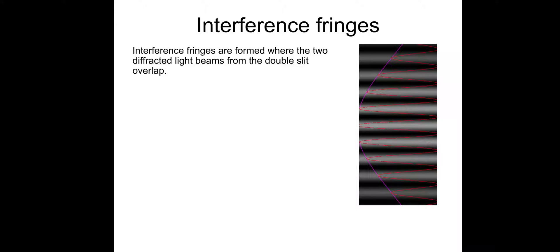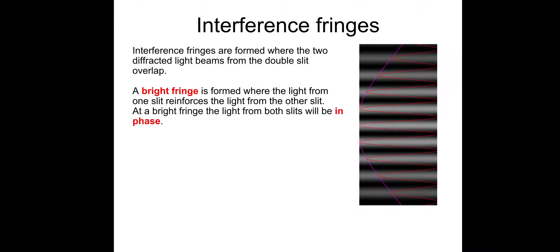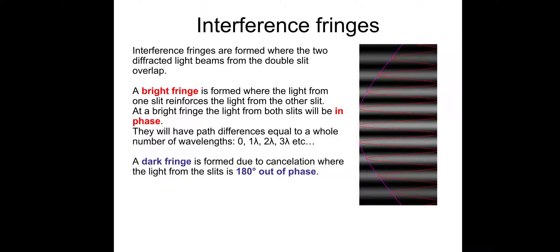Interference fringes are formed where the two diffracted light beams from the double slit overlap. A bright fringe is formed where the light from one slit reinforces the light from another slit. That bright fringe, the light from both slits will be in phase, so a path difference is equal to a whole number of wavelengths. Dark fringe is formed due to cancellation where the light from the slits is 180 degrees out of phase, and they'll have path difference of a half-integer number of wavelengths.